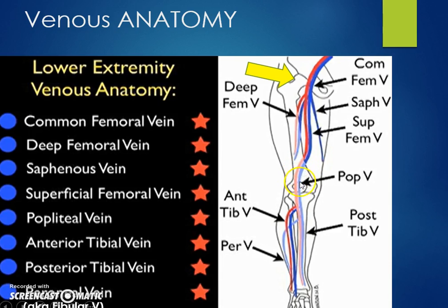The popliteal vein, once it leaves the popliteal space, trifurcates into the anterior tibial, the peroneal vein, and the posterior tibial vein — those are the deep veins you need to know. You also need to be familiar with the saphenous vein, which is the back door of the superficial venous system into the deep venous system. This is how superficial clots can propagate very proximally and join into the common femoral vein, where they carry a high risk of embolization.